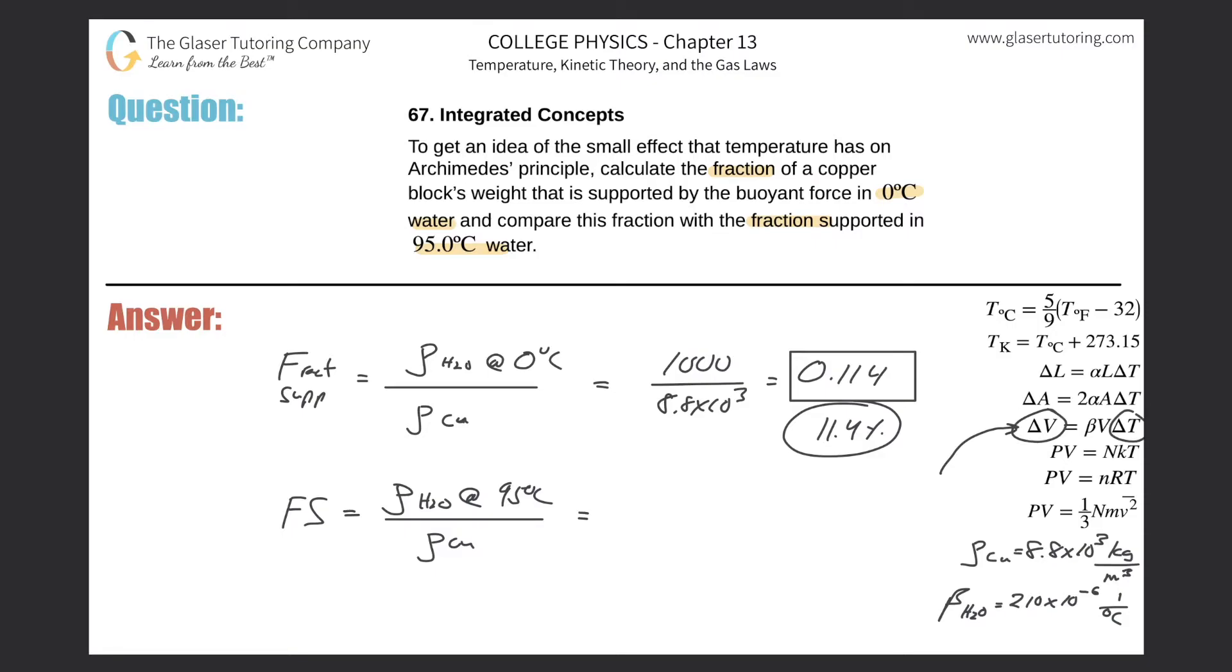We know that the volume of a particular fluid will change if the temperature changes. That's what that formula tells us. So let's assume that we have a one cubic meter value of water, so we have one meter by one meter by one meter. That's the original volume, so Vi equals one.